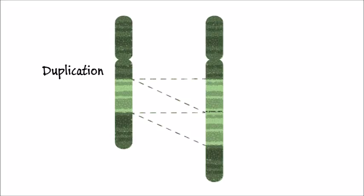This is an example of a duplication. The light green section represents genetic material that has been copied and put back into the chromosome, so now there's twice as much of that genetic material as is typical.